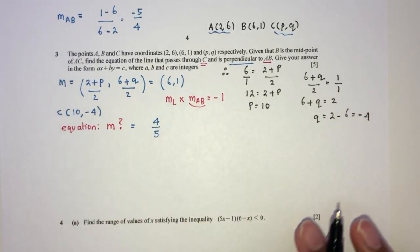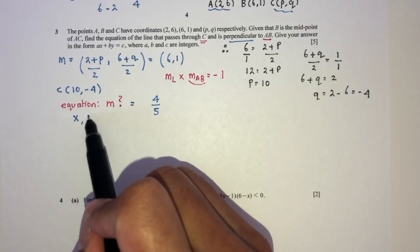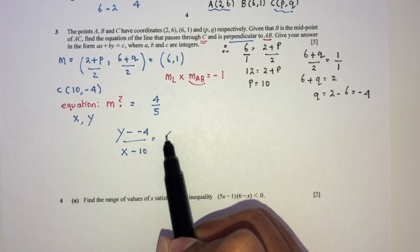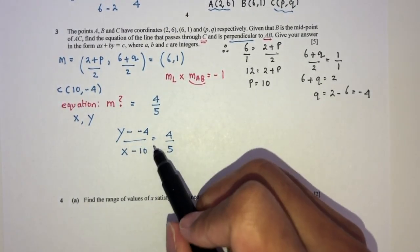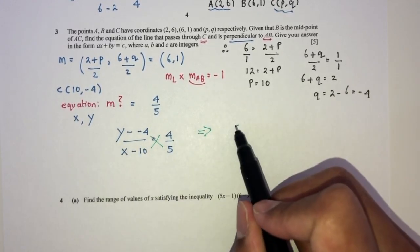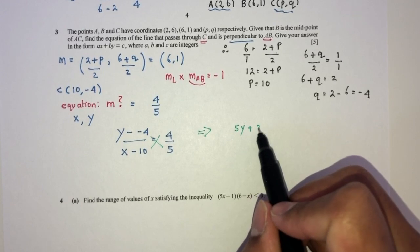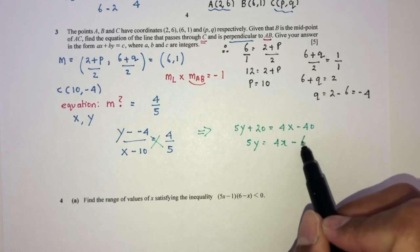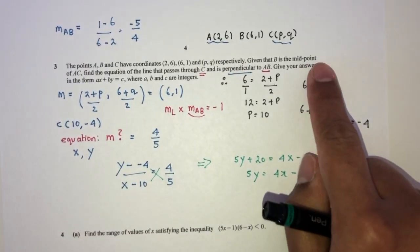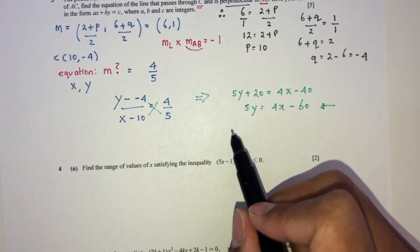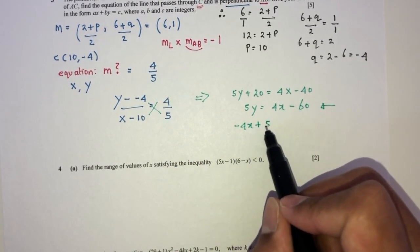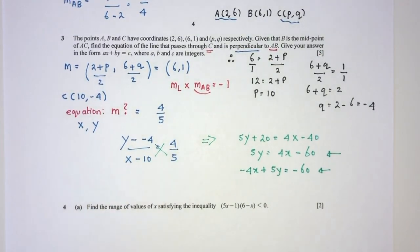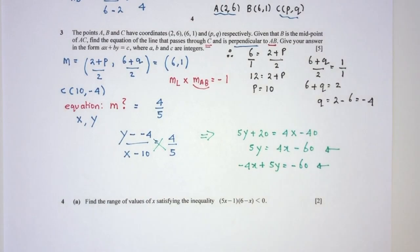Since we have the gradient and the passing point C, we can find the equation easily. The equation will be y minus its y-value equals the gradient times x minus its x-value. Then cross multiplying: 5y plus 20 equals 4x minus 40, so 5y equals 4x minus 60. Rearranging to the form ax plus by equals c gives minus 4x plus 5y equals minus 60. All values are integers. That is your question number 3.